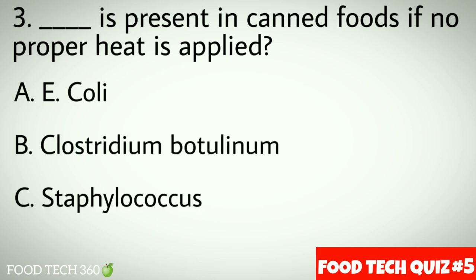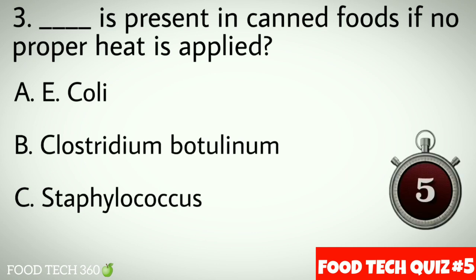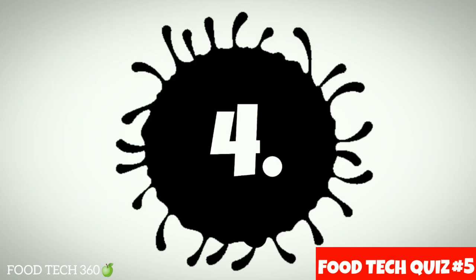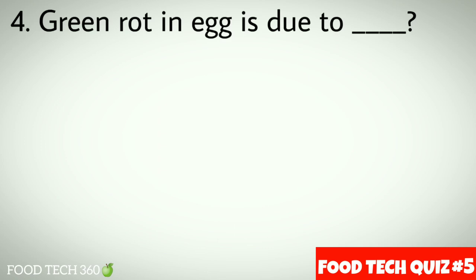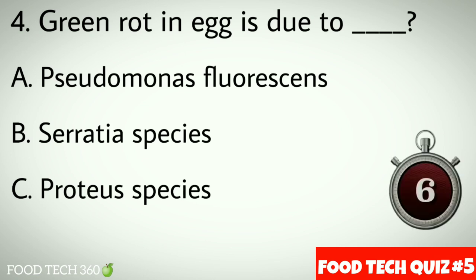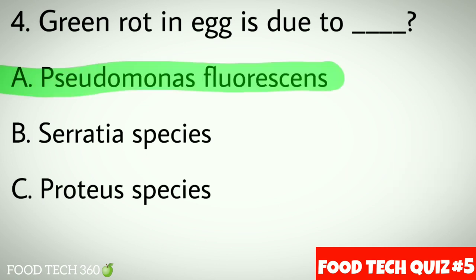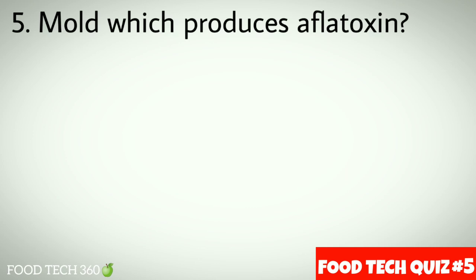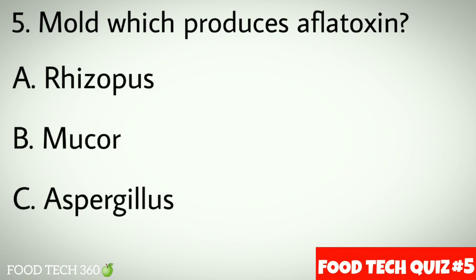Options: a) E. coli, b) Clostridium botulinum, c) Staphylococcus. Correct answer: b) Clostridium botulinum. Question number four: green rot in egg is due to dash. Options: a) Pseudomonas fluorescens, b) Serratia species, c) Proteus species. Correct answer: a) Pseudomonas fluorescens.